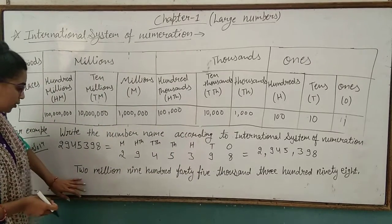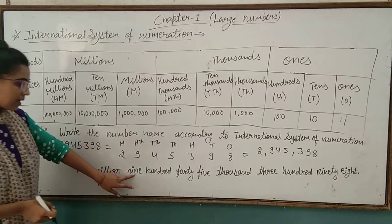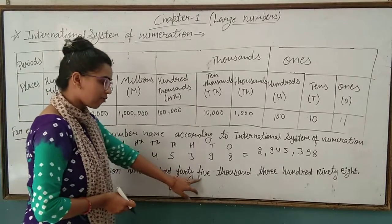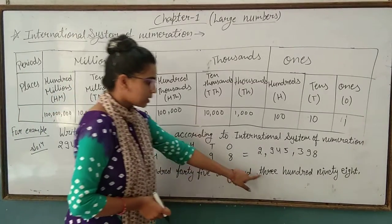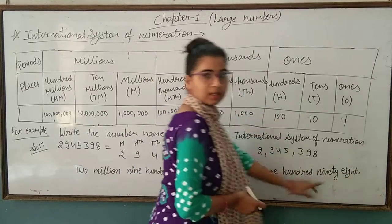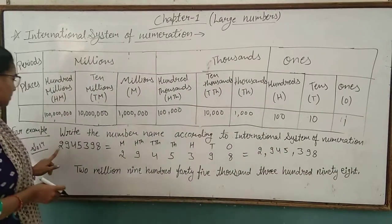So the number name of this number is: 2 million, 945 thousand, 398. This is the number name of 2,945,398.